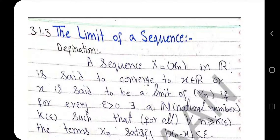Assalamu alaikum students. Today we are going to discuss the tail of a sequence and how the tail of a sequence affects the convergence of a sequence. First of all, we should revise the definition or limit of a sequence. We already discussed in detail about the sequence and the difference between infinite set and sequence, and how to find the limit of a sequence. Let x be any sequence of real numbers and small x be any element of real numbers. Then x is said to be converging to a limit x.